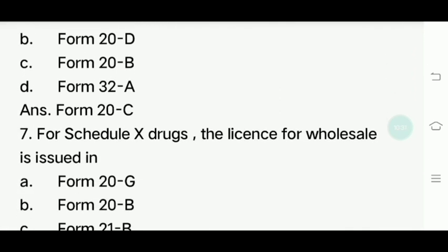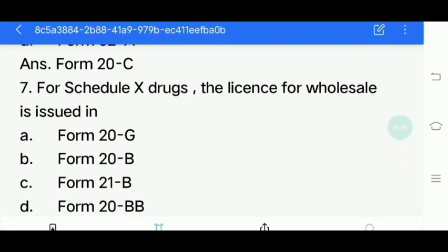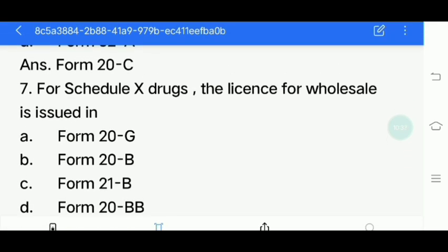Seventh question: For Scheduled X drugs, the license for wholesale is issued in which form? Options: Form 20G, Form 20B, Form 21B, Form 20BB. Answer is Form 20G.